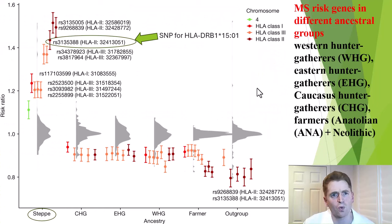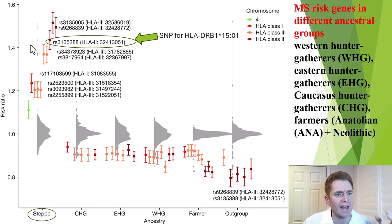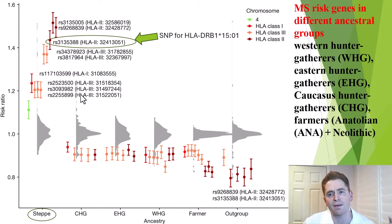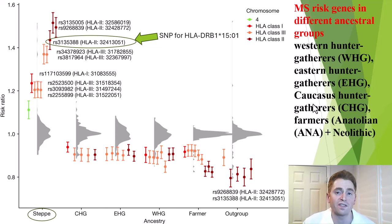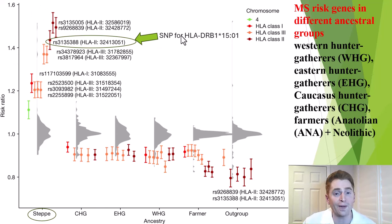Here are their results for different gene variants in different early human populations. Right away, you can see there's a huge outlier — many of the polymorphisms associated with MS are much more common in the steppe people. They compared this to other groups at that time: Western hunter-gatherers, Eastern hunter-gatherers, Caucasus hunter-gatherers, and Neolithic farmers. The single nucleotide polymorphism associated with HLA-DRB1*1501, the gene most associated with MS risk, shows a big difference in the steppe group.